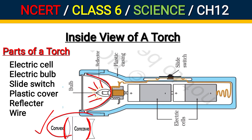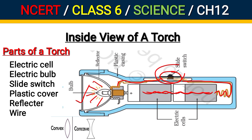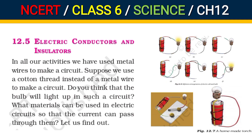You will learn more about these mirrors in higher classes. We have seen that when the electricity comes through the switch and the switch is on, the circuit is complete and the bulb glows. If the switch is off, then the circuit is incomplete and the bulb doesn't glow. The second topic is electric conductors and insulators.